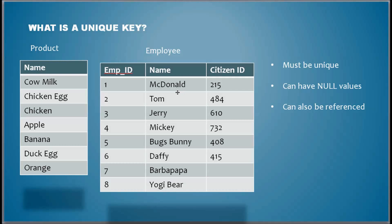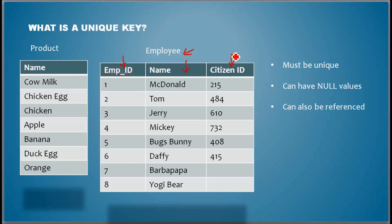Let's take this employee table. Whenever an employee is hired, the company assigns an employee ID to those employees, notes down their name, and then their citizen ID. In some countries it's called a social security number, in some countries it's called a PAN number or some other ID — some citizen ID.